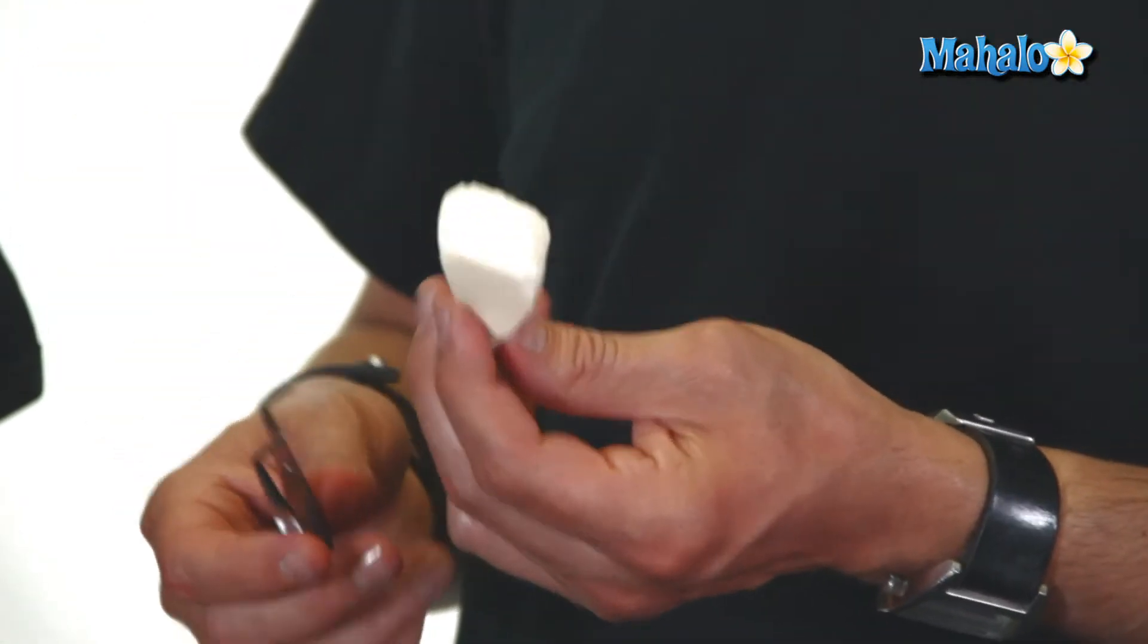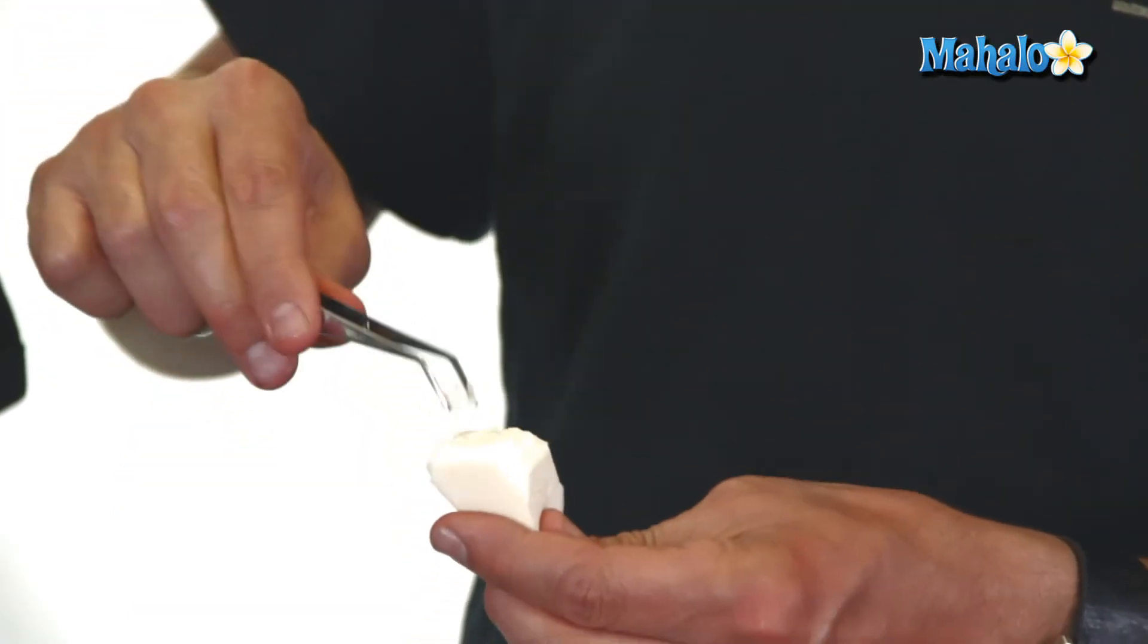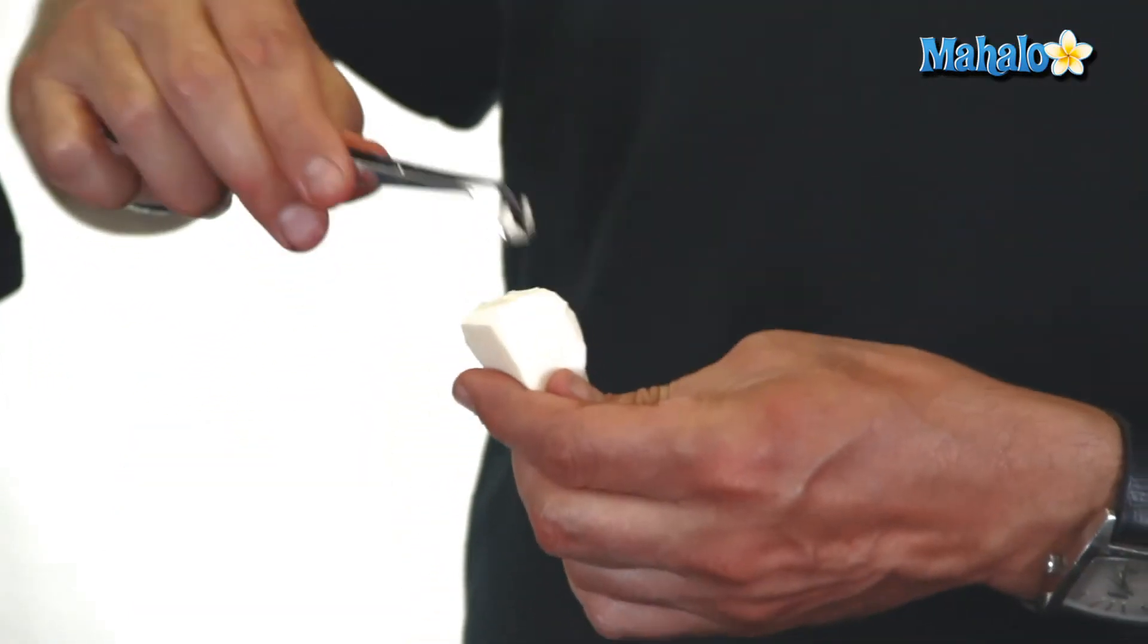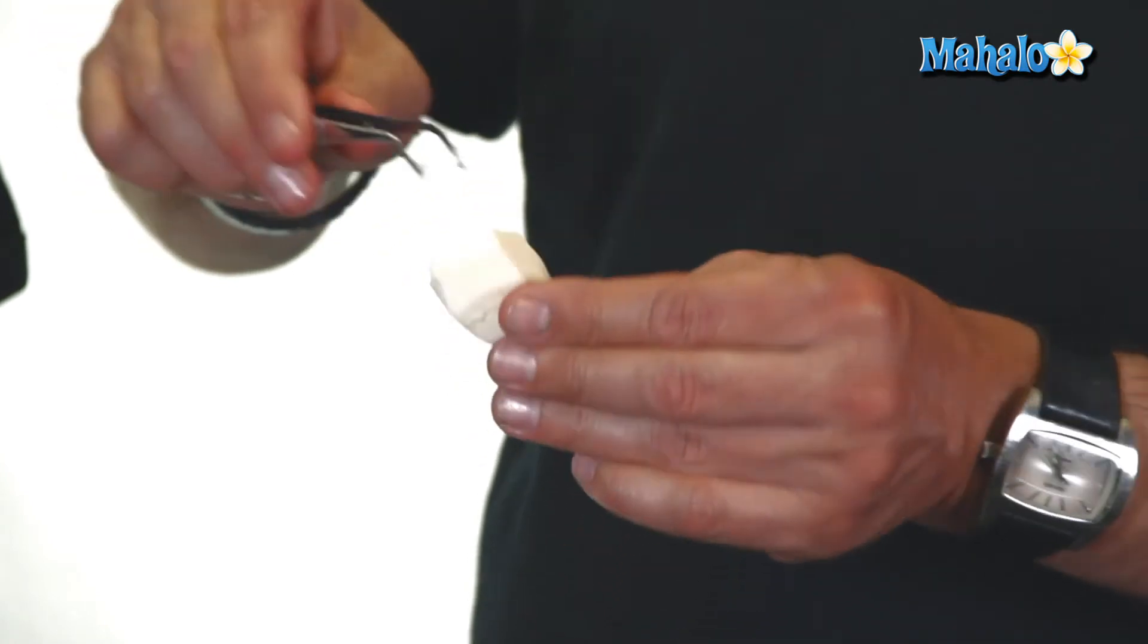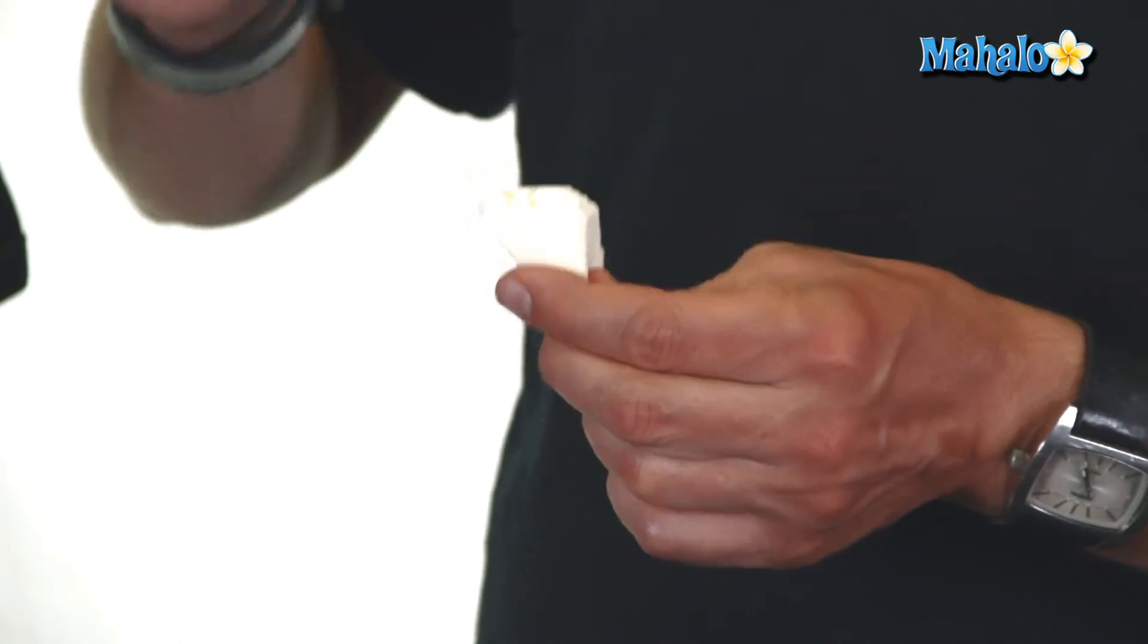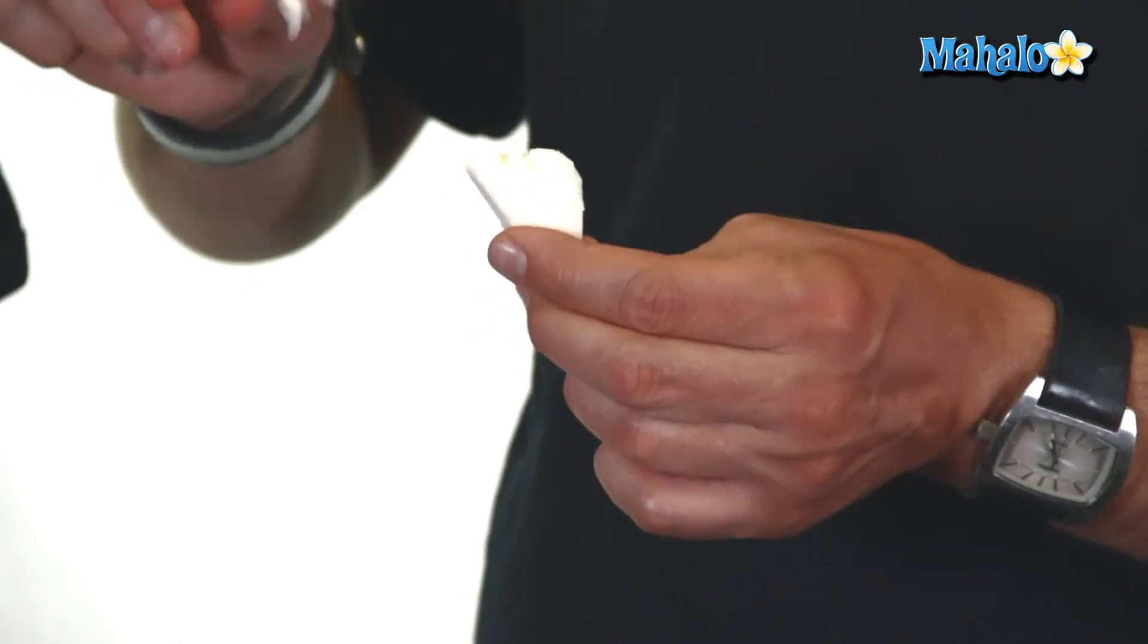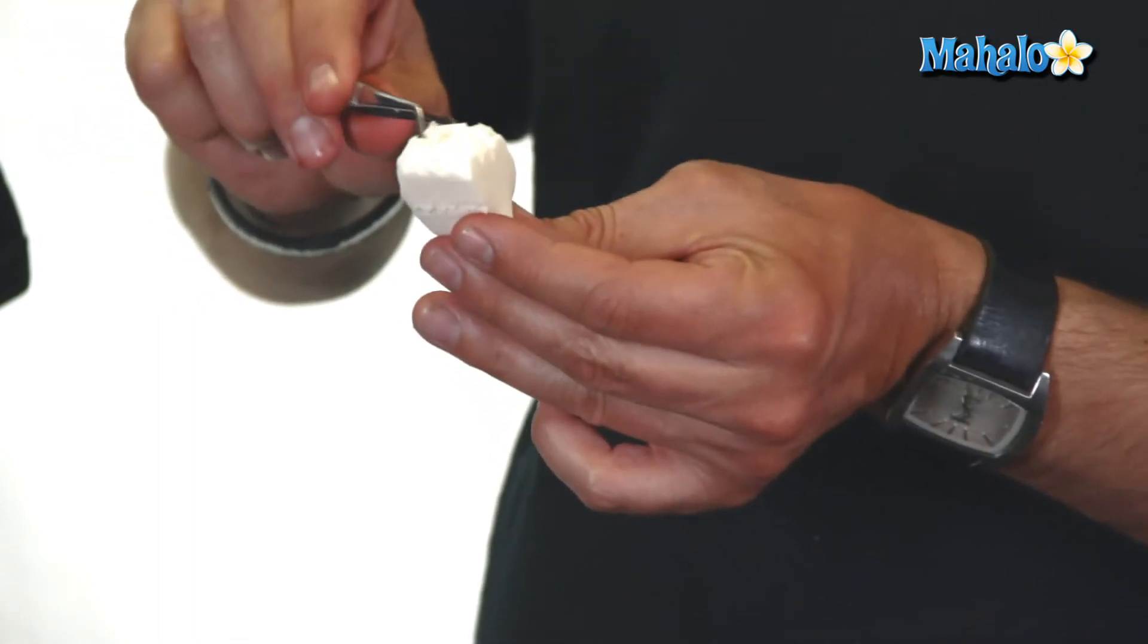After you have the edges rounded, next you're going to take tweezers and start picking very small holes. Don't be afraid to really dig deep with the sponge, because what you're trying to create is what we call in the industry a model, a modeling effect.